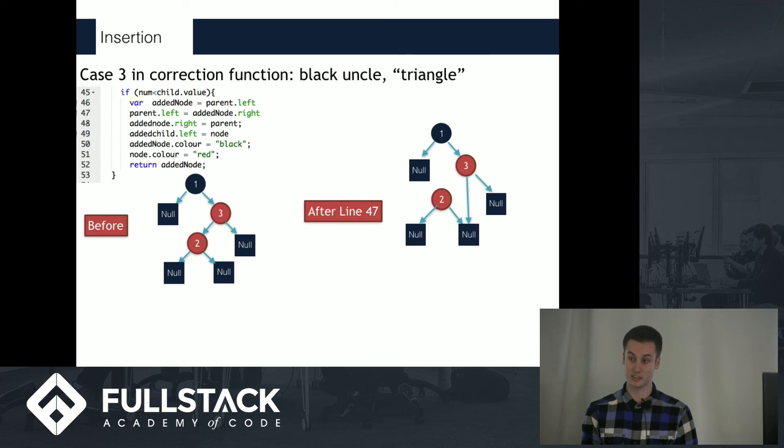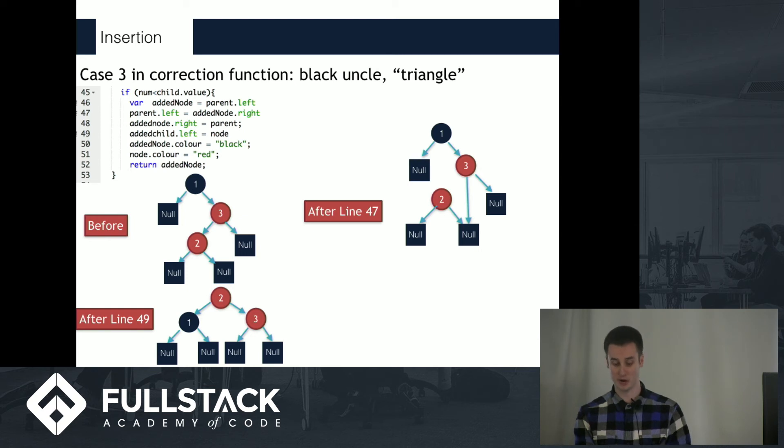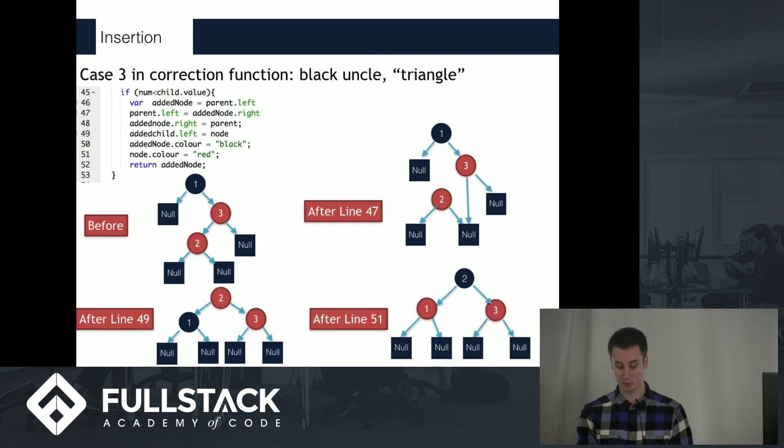Again, we reassign the pointer and rotate it, but this time the newly inserted node becomes the parent of both its parent and grandparent nodes, instead of the parent and grandparent rotating. After this again, we recolor the nodes in order to ensure that we still have no two red nodes in a row, and that an equal number of black nodes are in each path.